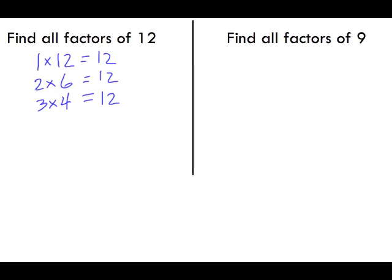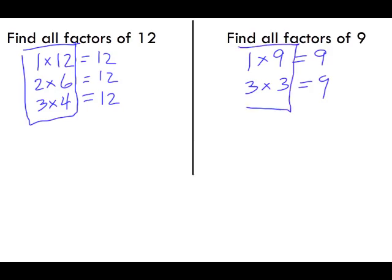Now let's find all factors of 9. 1 times itself will give me 9, so two of the factors are 1 and 9. But what else can divide evenly into 9? The number 3 can divide evenly into 9, so 3 times 3 will give me 9. These are the factors of their respective numbers.